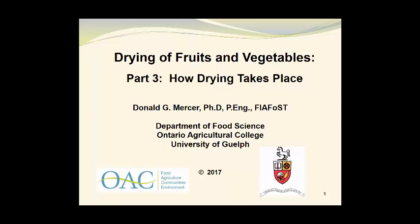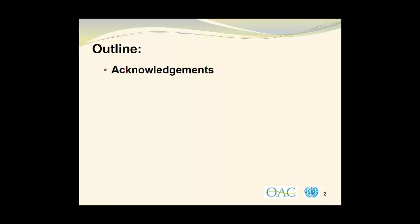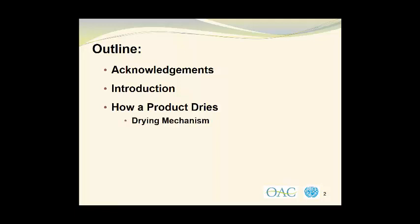Welcome to the third part in the series of videos on the drying of fruits and vegetables. In this video presentation, we will take a look at how drying takes place. My name is Don Mercer and I am with the Department of Food Science at the Ontario Agricultural College, University of Guelph. We will begin with several acknowledgments followed by a brief introduction, then examine how a product dries and look at the drying mechanism, consider a bit of mathematics, and discuss how the end point of a drying process can be determined.